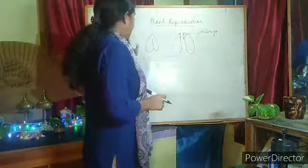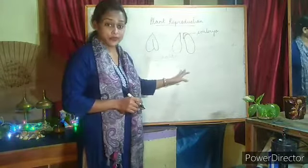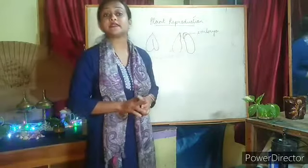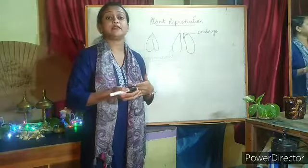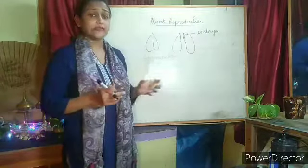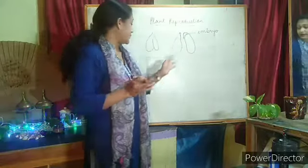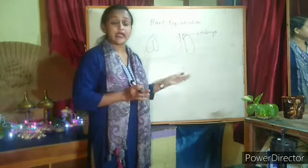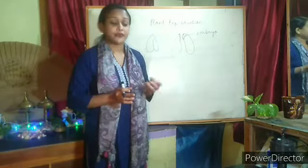Next, before moving on, let's discuss about the seedling. What is a seedling? As told earlier, the baby plant that comes out from the seed is called a seedling. When a seed gets all the favorable conditions — all three factors: air, warmth, and water — then it will germinate into a seedling.